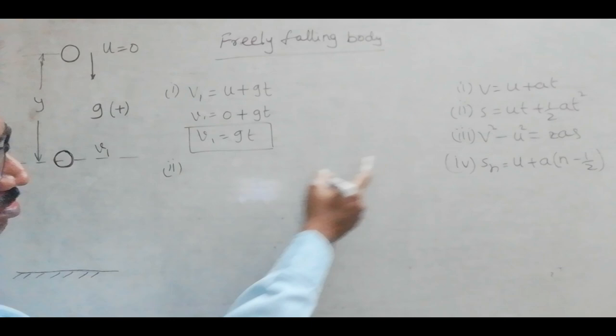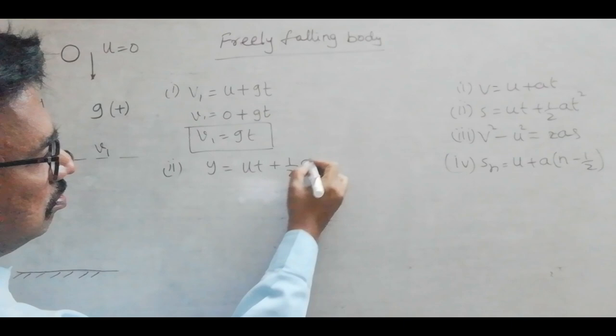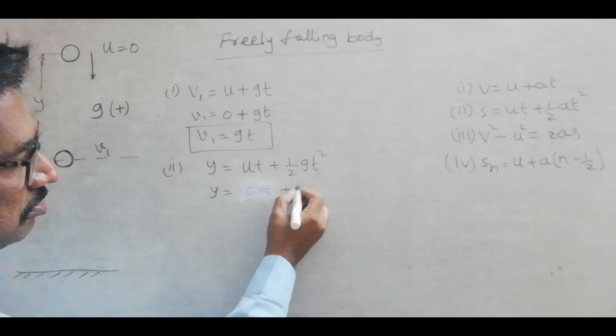Coming to the second relation, to find the downward displacement Y, we can use the relation: Y equal to UT plus half GT square. As U equals 0, this term becomes 0, so Y equals half GT square.